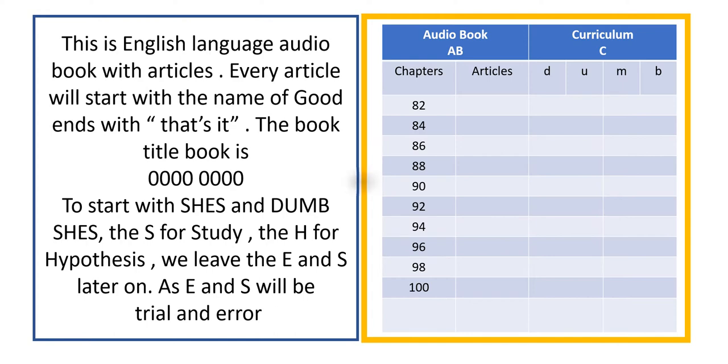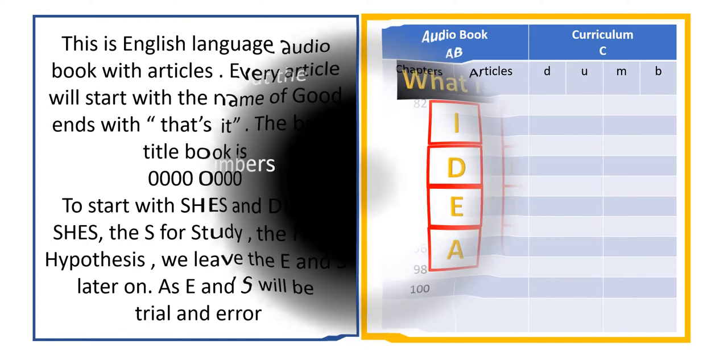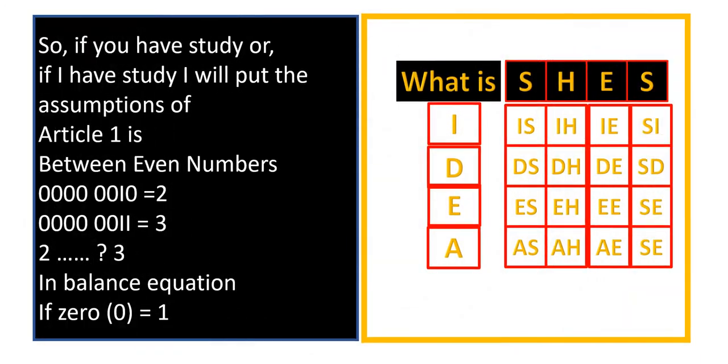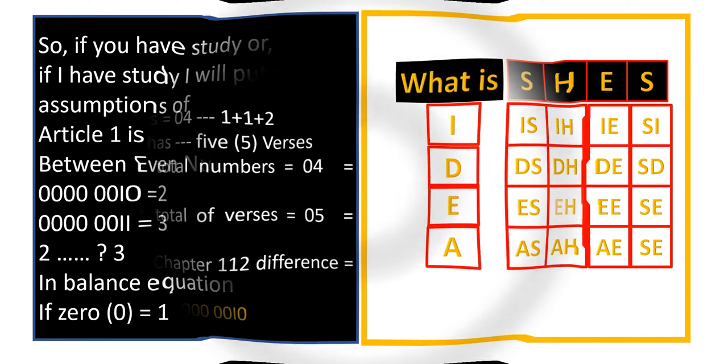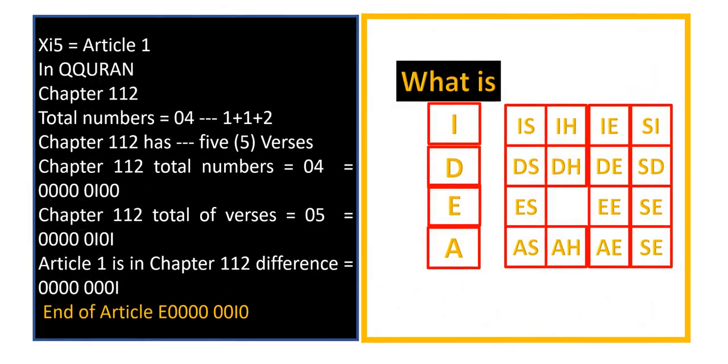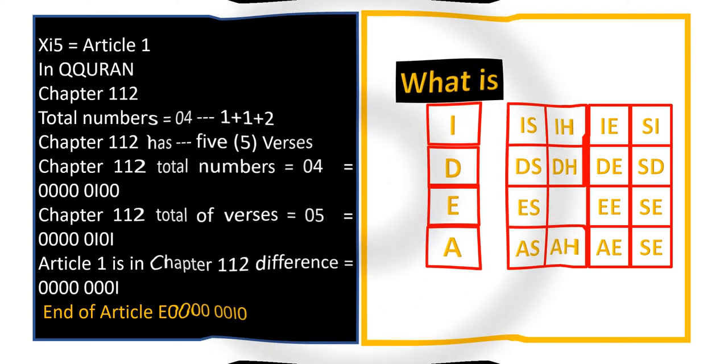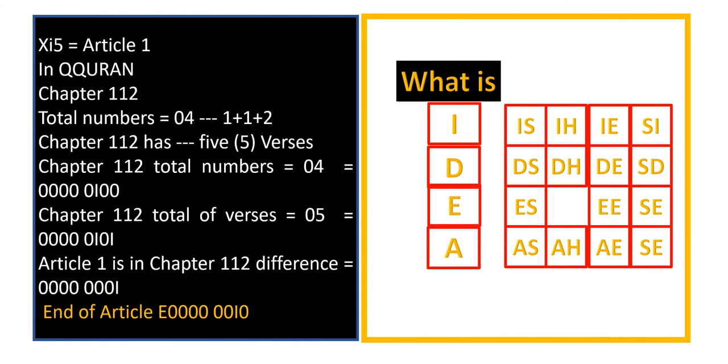Anyhow, on the left side, I said if you have study, or if I have study, I will put the assumptions of article 1 is between even numbers 2 and odd numbers 3. Of course, between 2 and 3 there is 1 in balance equation. If zero equals 1.